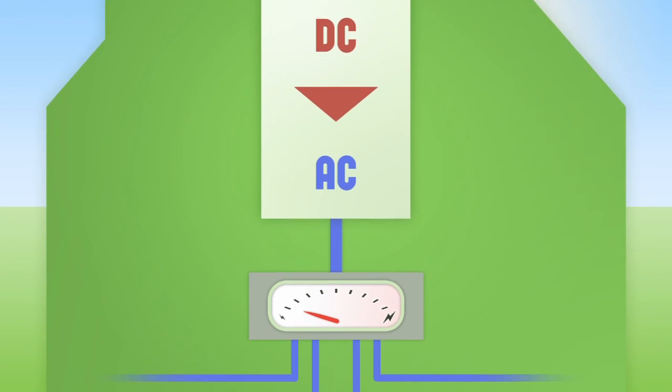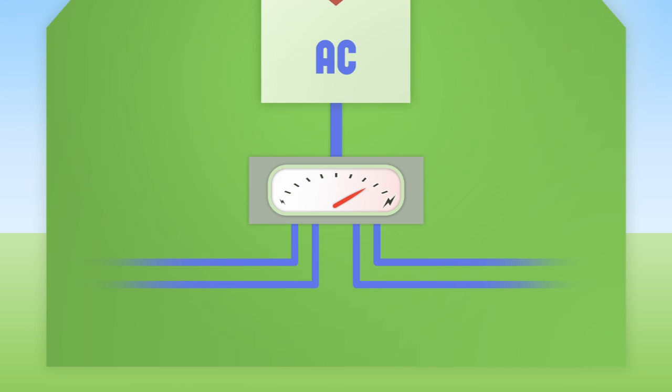From the inverter, the electricity flows through a meter in your mains consumer unit, within your fuse box, where it connects with your home's electrical system.